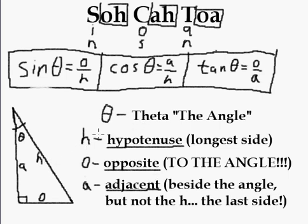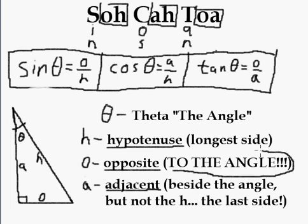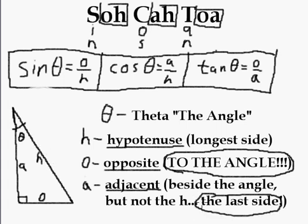Things to remind you: hypotenuse is the longest side; opposite is opposite to the angle — this is very important, when I say opposite I mean opposite to the angle; and adjacent means beside the angle. It's not the H that's beside the angle. I usually just do it as the last side: start with H, then O, then A — just do your A last.